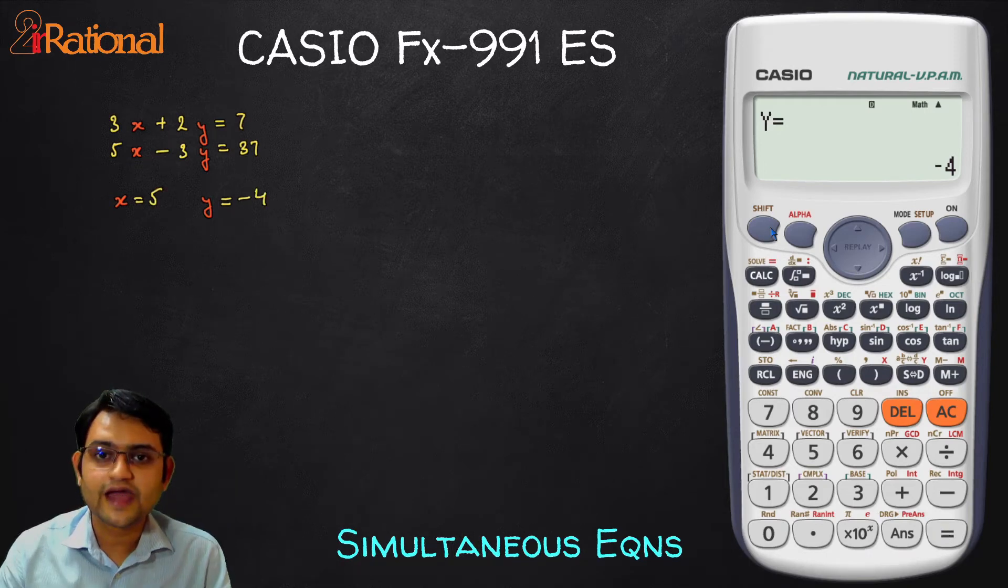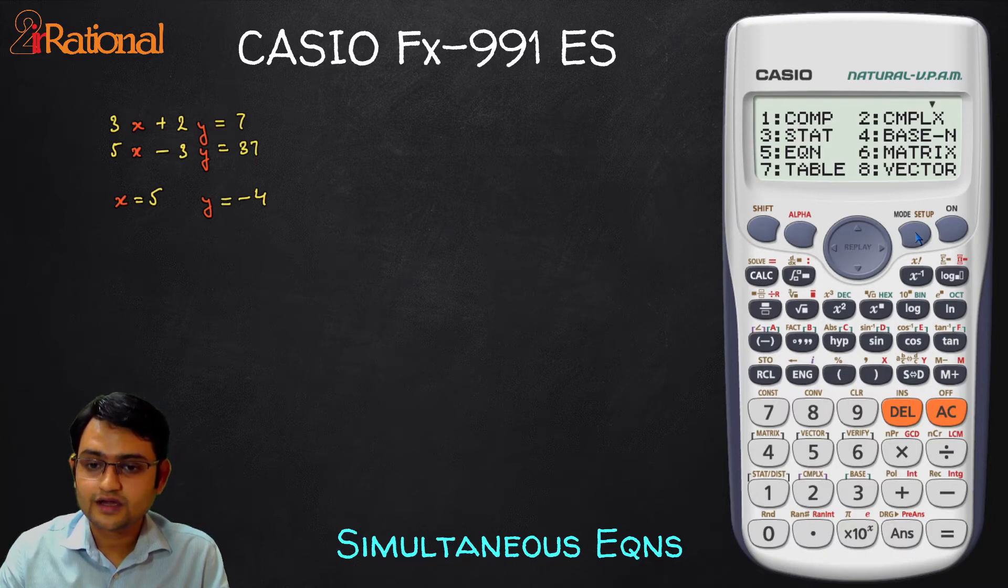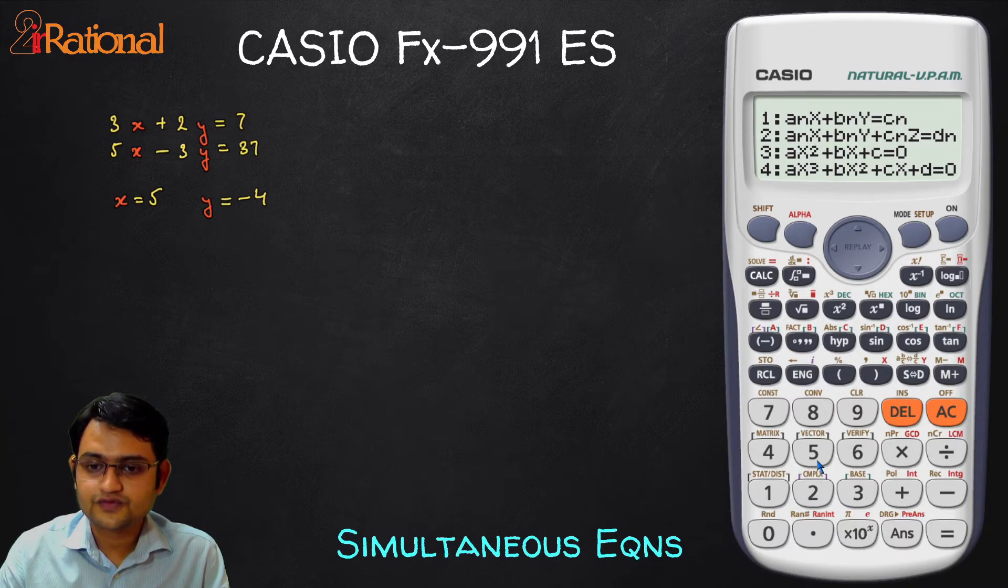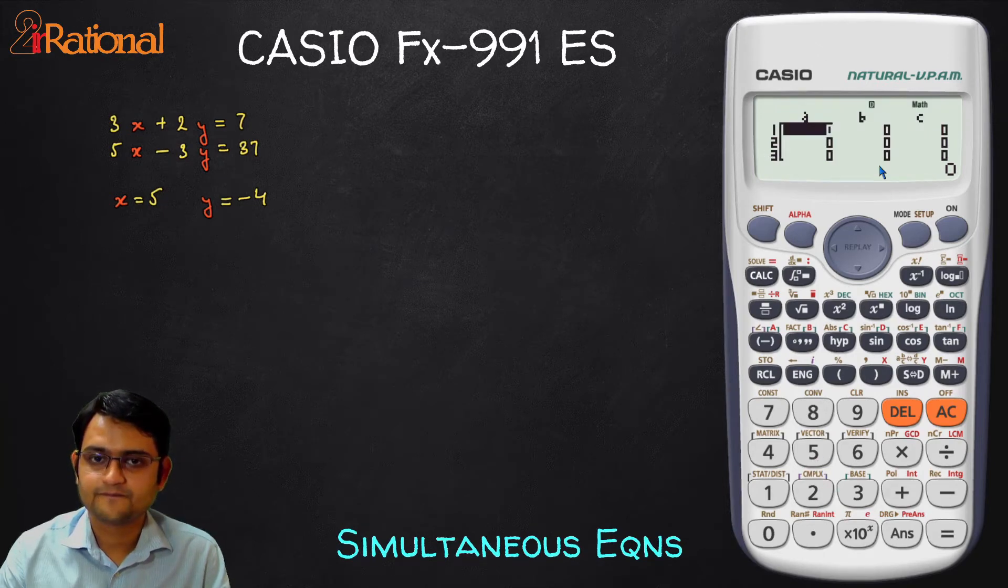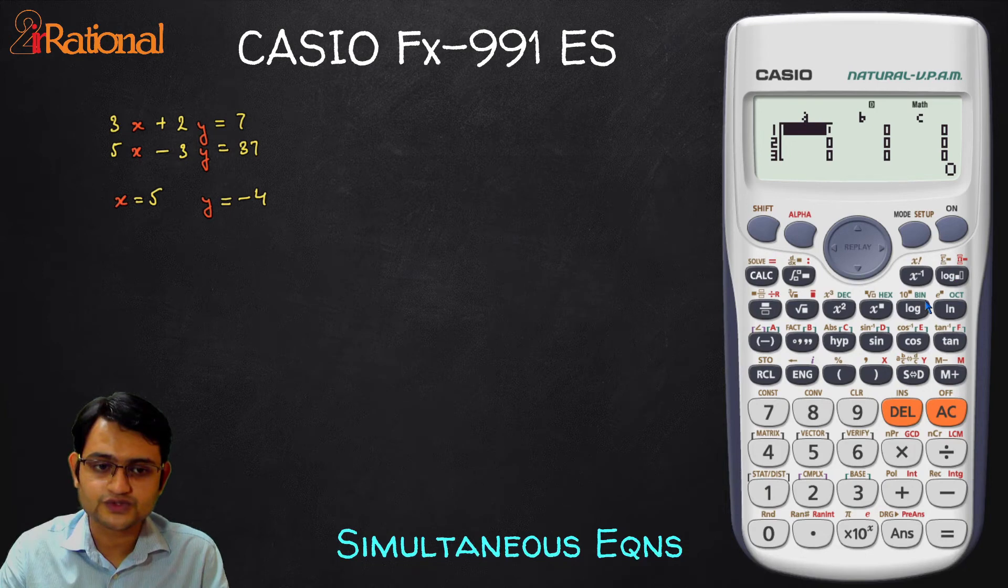Similarly if we have three variable simultaneous equation I will go to mode, 5, and I will press 2. As we can see here we have three equations and we will have four options. Here we will have d as well as we put in our values. So let's take an example.